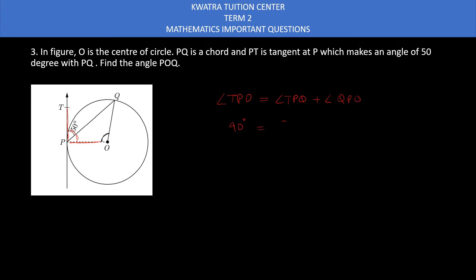TPQ is 50 degree, QPO is x let's say, and this will give you 90 minus 50 equals x, and 90 minus 50 is equal to 40, so basically x value is 40 degree.